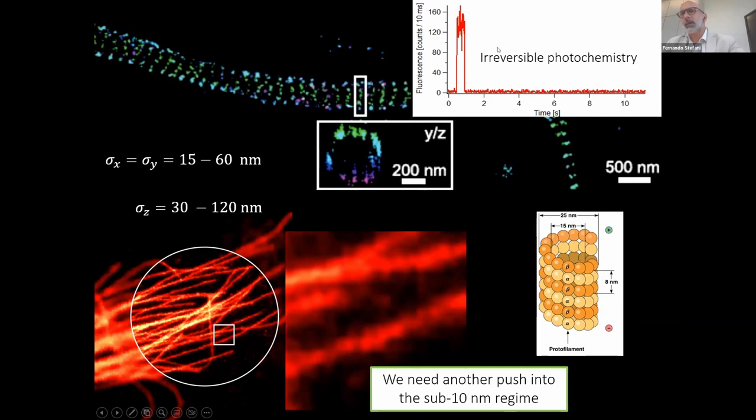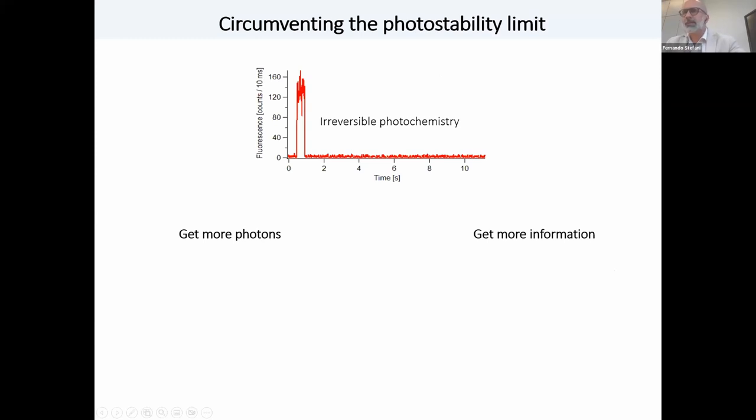And the problem, the reason why we cannot get farther is irreversible photochemistry. So the fluorophores that we use, we want them to be excited with light and to emit a fluorescence photon after that. But sometimes they use that extra energy to undergo an irreversible photochemical reaction. And then the experiment is over. Here you see an example of a single molecule trace. They emit fluorescence up to some point and then they photobleach. So this limited photon budget that we have is the reason for the limitation in resolution of these techniques. So to circumvent this problem, there are obviously two ways. You either get more photons from a molecule or you get more information from the few photons that you have available.